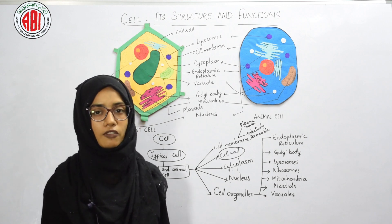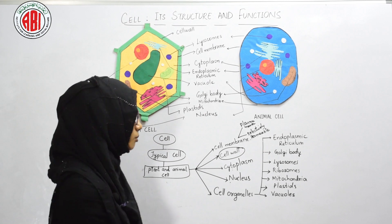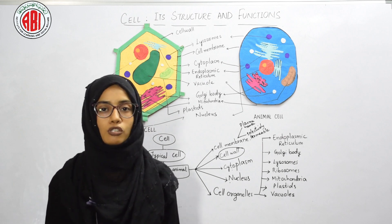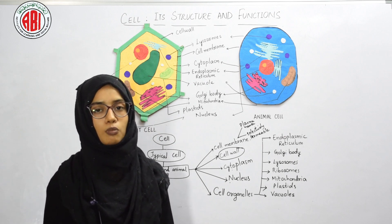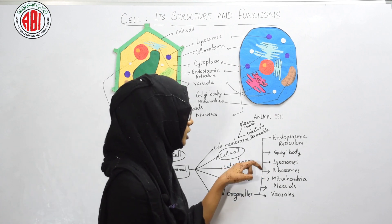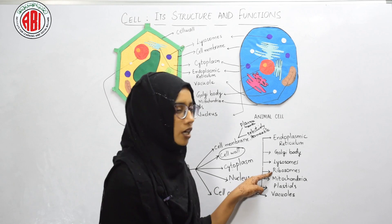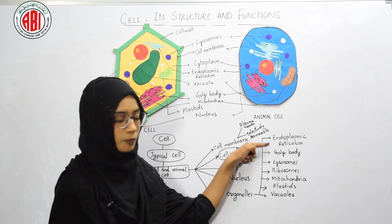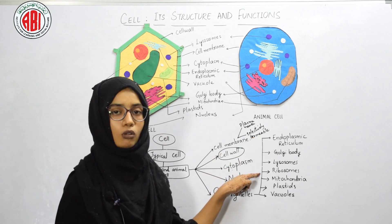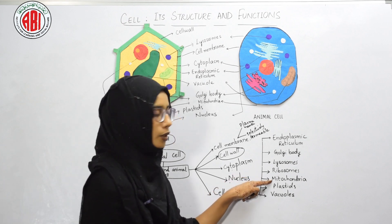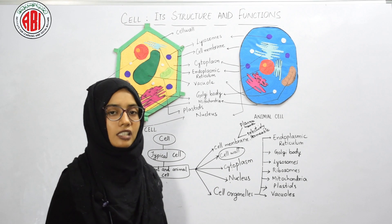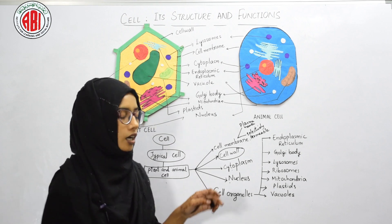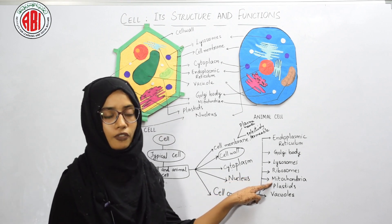Lysosomes are tiny cell organelles present in both plant and animal cells that carry destructive enzymes. When the cell needs to destroy material, the material is transferred to lysosomes, which digest it using those enzymes. Ribosomes are small particles attached to the endoplasmic reticulum that help in protein synthesis. Mitochondria, the powerhouse of the cell, converts food into energy in the form of ATP — the currency of the cell — required for physical and chemical activities.